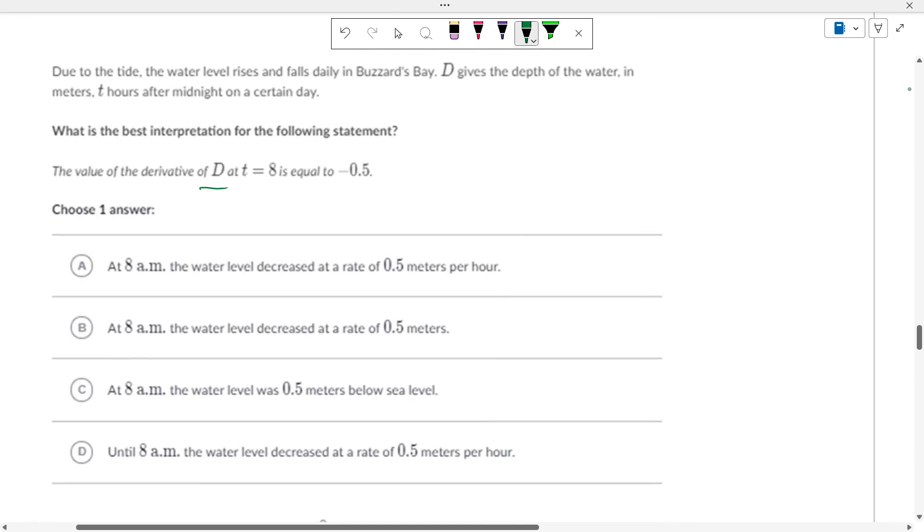The value of the derivative at 8 is equal to negative 0.5. So, due to the tide, the water level rises and falls at Buzzards Bay. D is the depth of the water. So, at time equals 8, the water is going down at a rate of 0.5 meters per hour.